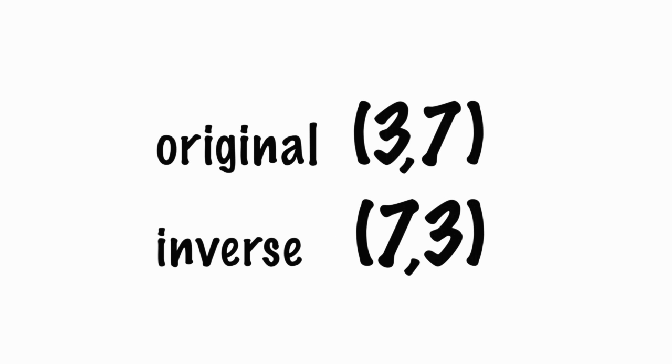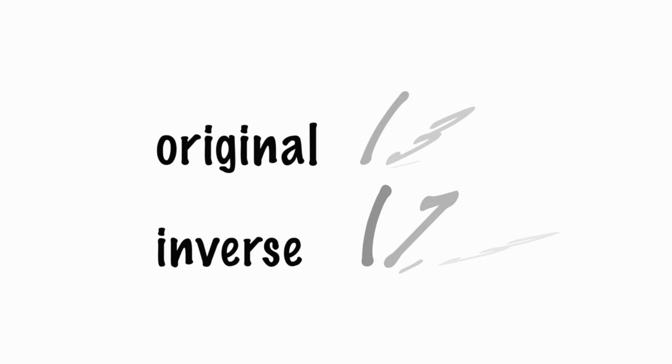What if I tell you a point 3 comma 7 is on a function — what would the inverse function look like? Again, the only rule is switching the x and the y, so if 3 comma 7 is on the original function, then 7 comma 3 is on the inverse function. We're just switching what was the domain into the range and what was the range into the domain. To see more examples of inverse functions, click on the link above. See you next time.